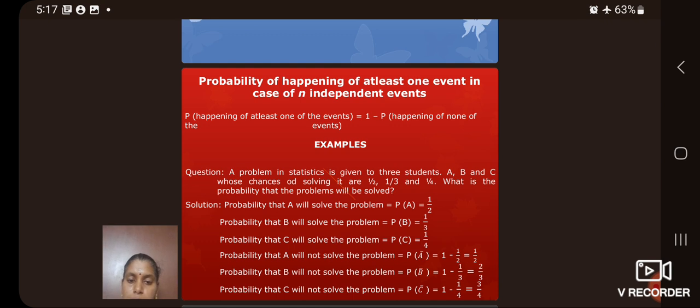Now, let us see the probability of happening at least one event in case of an independent event equal to 1 minus probability of happening of none of the events. For example, a problem in statistics is given to three students A, B and C whose chances of solving it are 1 by 2, 1 by 3 and 1 by 4. What is the probability that the problem will be solved?